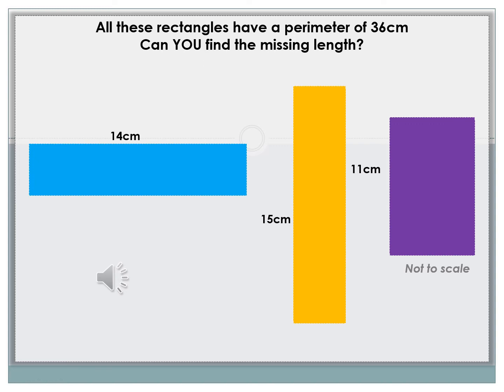Let's see if you can remember how to find the perimeter which we focused on yesterday. All of the rectangles on this slide have a perimeter of 36 centimeters. Can you find the missing lengths?